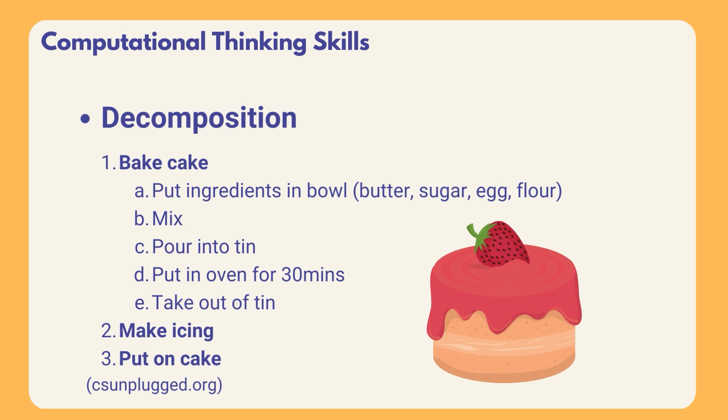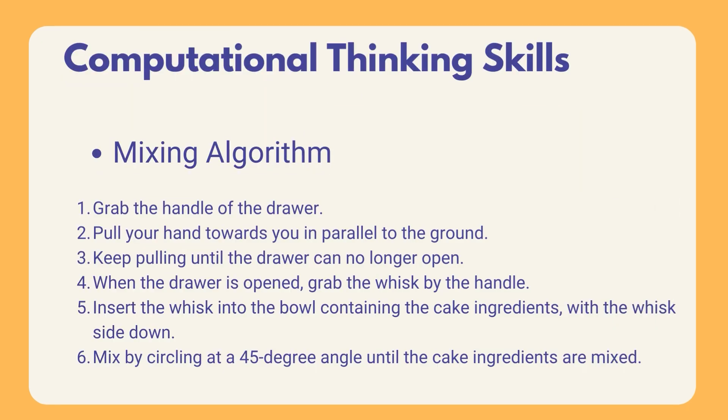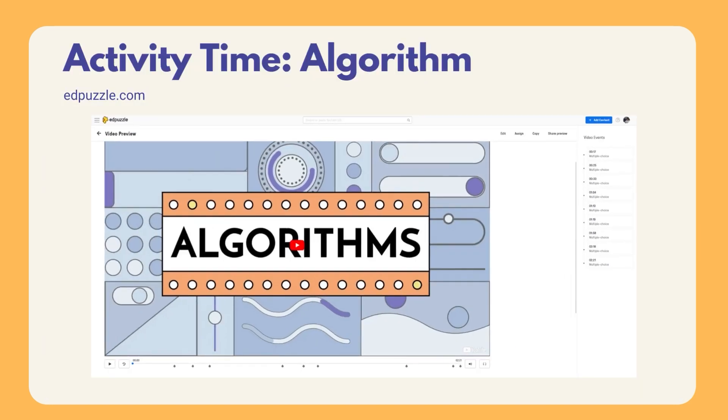For example, let's choose the mix task, which is one of the tasks we need to do while making a cake. Firstly, grab the handle of the drawer. Secondly, pull your hand towards you in parallel to the ground. Thirdly, keep pulling until the drawer can no longer open. Fourth, when the drawer is open, grab the whisk by the handle. Fifth, insert the whisk into the bowl containing cake ingredients with the whisk side down. And lastly, mix by circling at a 45-degree angle until the cake ingredients are mixed. To better understand the concept of algorithm, you can pause this video and do the activity in the description.